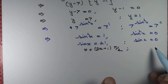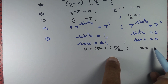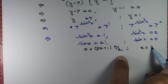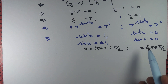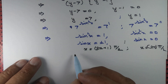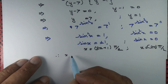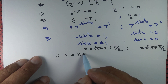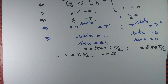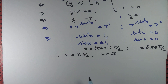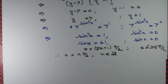If sin x equals 0, then x equals n pi, which means x is an even multiple of pi by 2. The first case gives odd multiples of pi by 2 and the second gives even multiples of pi by 2. Combining both, we conclude that x equals n times pi by 2, where n is any integer.